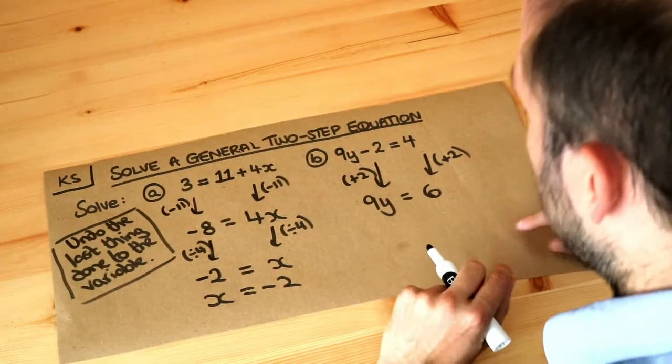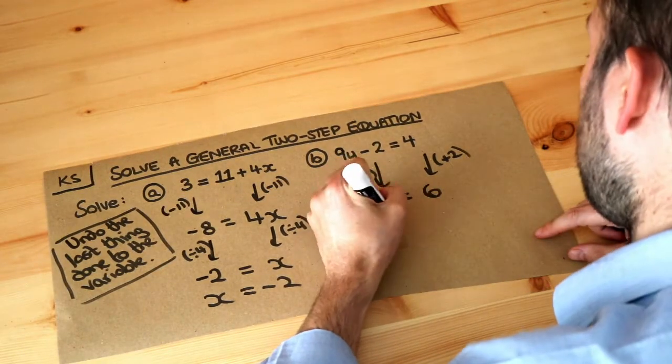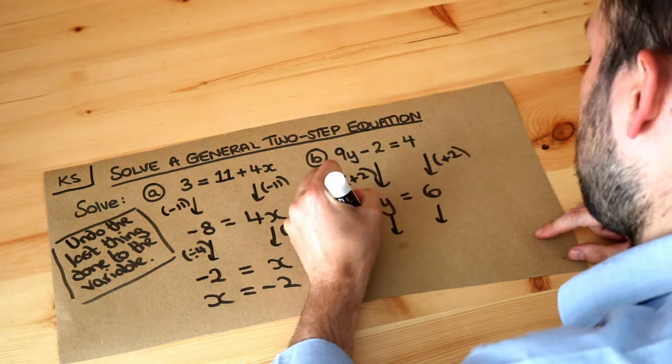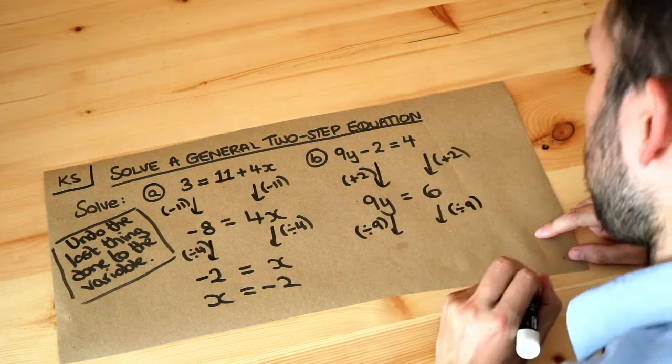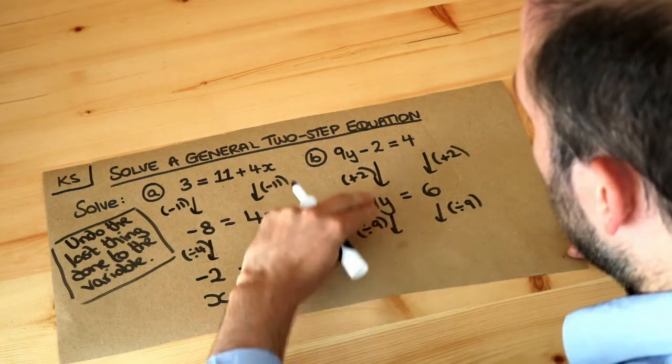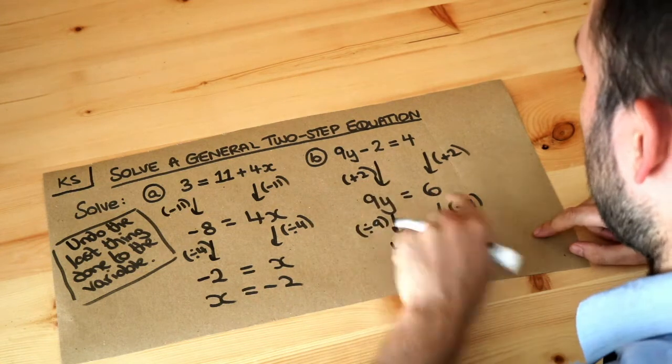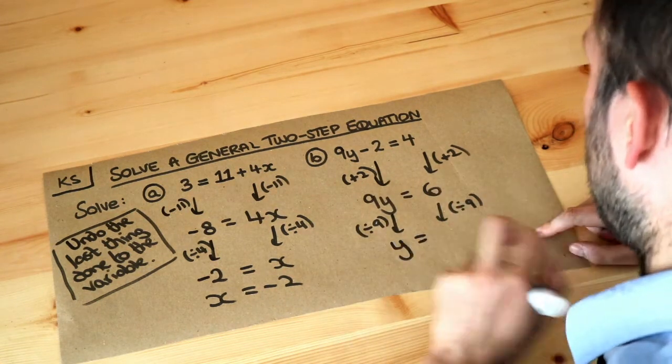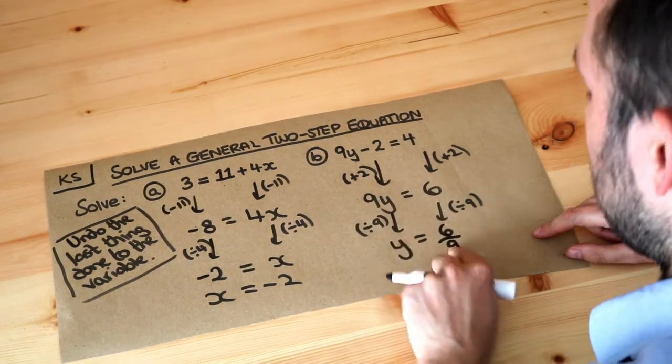Now let's think about the last thing that happened to y. y was multiplied by 9. So we want to undo the multiply by 9 which is to divide both sides by 9. So dividing the left hand side by 9 just gets rid of that 9 leaving just y. And then on the right hand side we've got 6 divided by 9 which we can write just as a fraction, 6 over 9. The 6 has been divided by 9.